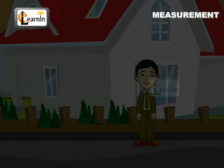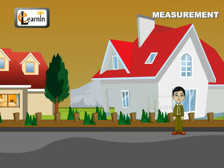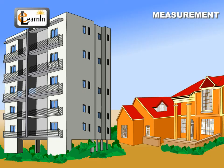Here are more examples for you to compare. For Ramu, the distance between his house and his school is farther when compared to the distance between his house and the playground. The building on the left is taller than the building on the right.